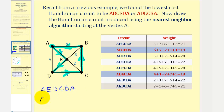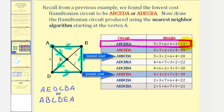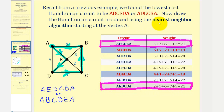Or in the reverse order, A, B, C, D, E, A. Looking at the table, notice A, B, C, D, E, A actually has a total weight of twenty-one, not the optimal Hamiltonian circuit. The equivalent circuit has the same weight of twenty-one. This is exactly why the nearest neighbor algorithm is a heuristic algorithm — it may or may not give the optimal Hamiltonian circuit. In this case, it did not.